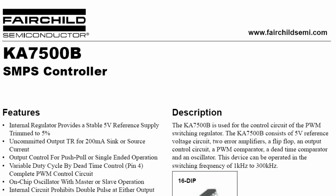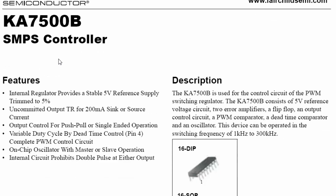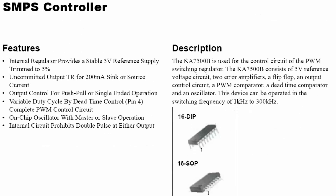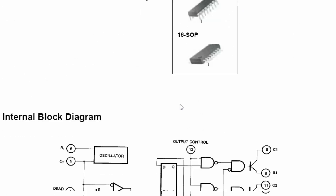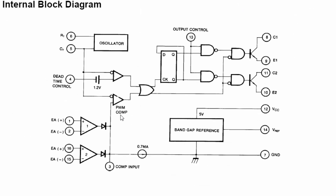This is an SMPS controller with a frequency range of 1kHz to 300kHz in a 16-pin IC. It has a 5-volt reference and 200mA sink-to-source current output, with control for push-pull and single-ended topologies. It also features dead time control and full PWM control. Looking at the diagram, it is totally like the TL494 — it is exactly the same.